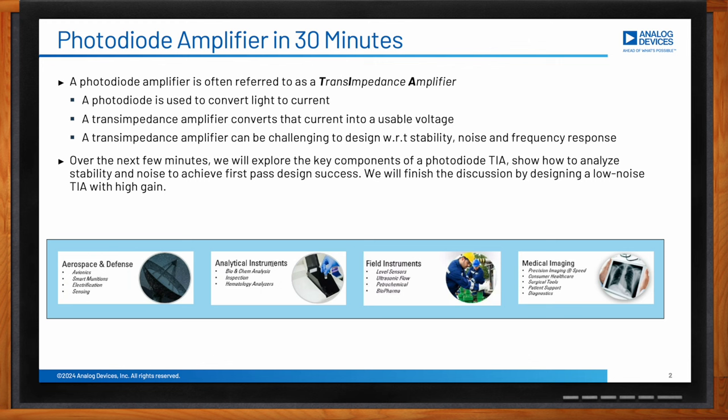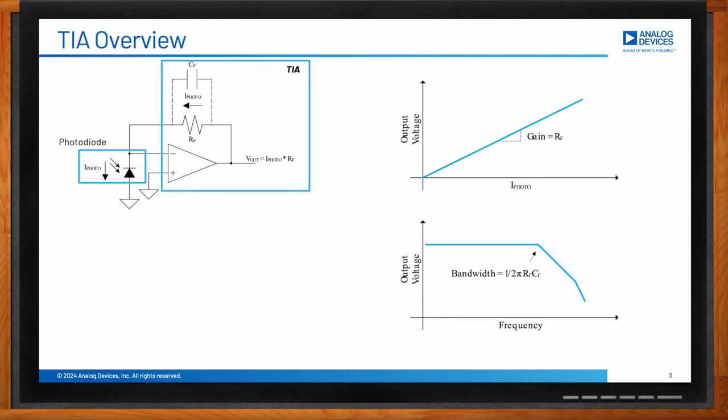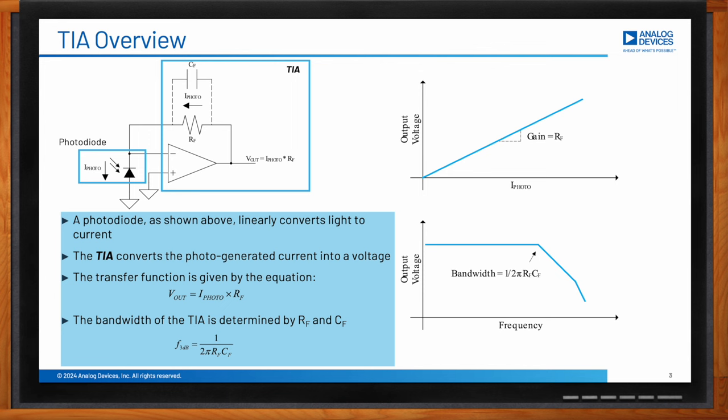Getting started on a transimpedance design can be daunting as there are a lot of choices when selecting a photodiode and amplifier. The simplest form of a TIA: the op-amp forces the voltage across the photodiode to remain near zero, ensuring a linear response to incident light. The photocurrent flows through the feedback resistor, and the output is given by photocurrent multiplied by the feedback resistance. The bandwidth is given by 1 over 2π·RF·CF.